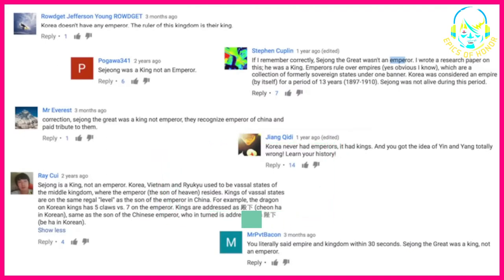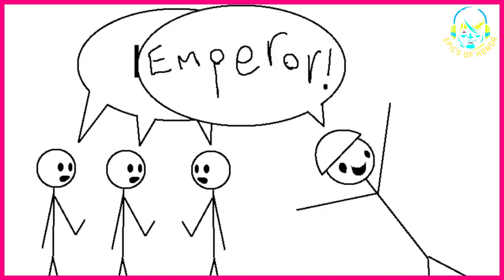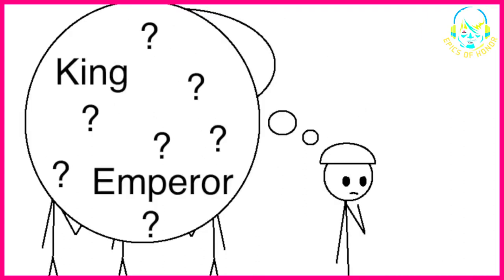As many people have since pointed out, however, Sejong was not an emperor — he was a king. No one calls him an emperor, and I shouldn't have either. But that got me thinking: how exactly do you tell whether someone is a king or an emperor?